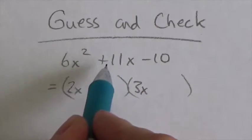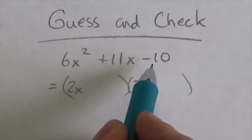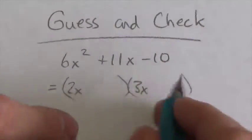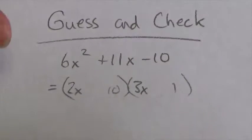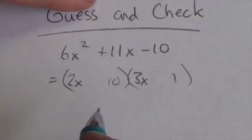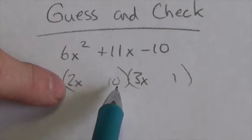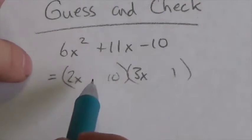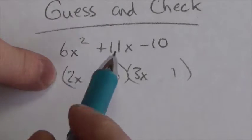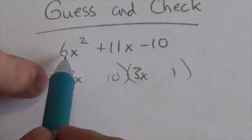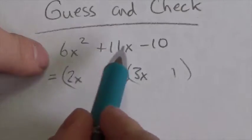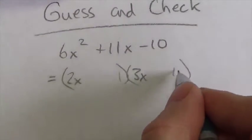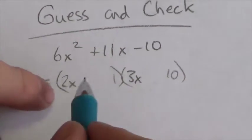Notice that the middle term here is positive. That tells me the larger factor has to be the positive one. Now, if I plug in 10 here, I've inadvertently introduced a common factor of 2 in just this binomial, which means I should be able to factor a 2 out of it. But if I can factor a 2 out of there, that implies I should have been able to take a 2 out of the whole expression — and there clearly isn't a factor of 2 common to all three terms. So I can't put 10 there; that guess makes no sense.